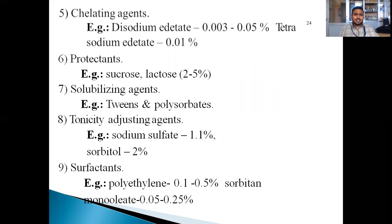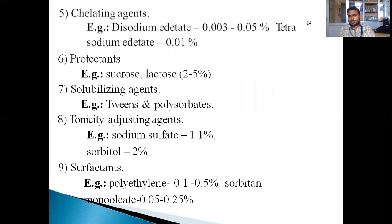The next example is chelating agents. The chelating agents we are using include disodium EDTA at 0.003% to 0.05%, and tetrasodium EDTA at 0.01%, which is used in small-volume parenterals.